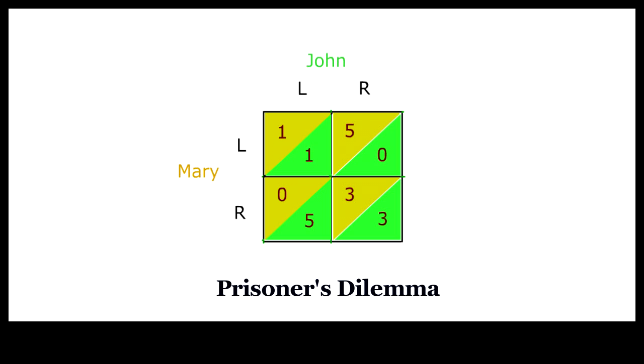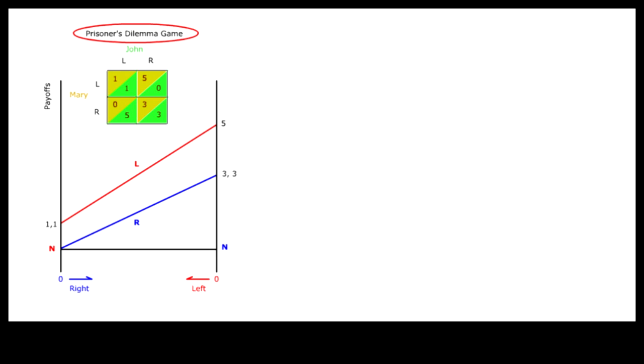But the meaning of this payoff matrix is more apparent if we extend it to a multi-party situation of N persons. The number of persons choosing R increases from left to right, and the number of persons choosing L increases from right to left.